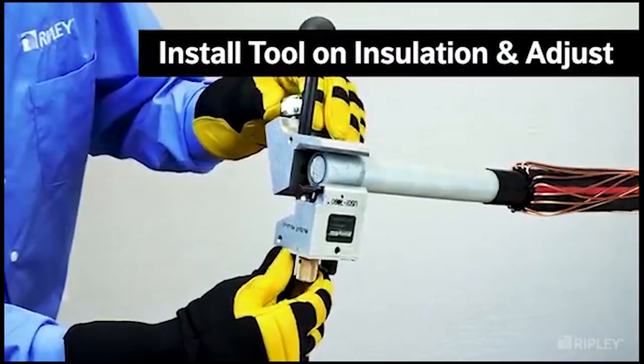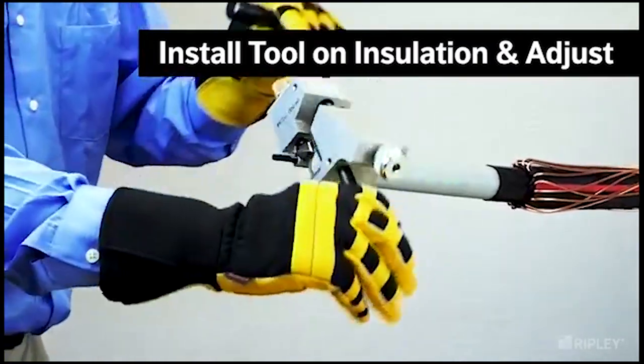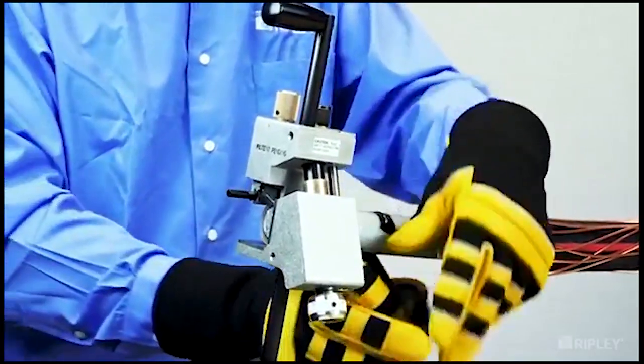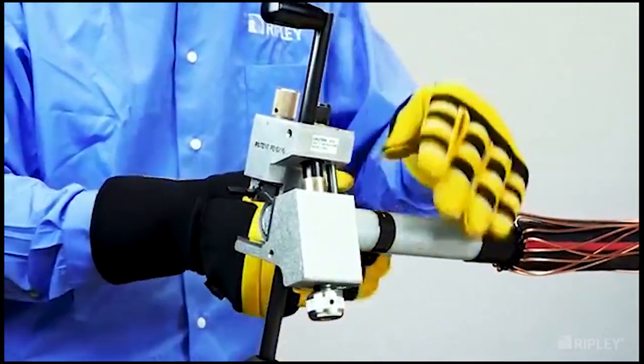Re-install the Infinity around the insulation and re-adjust the blade settings with the blade depth 1-32 of an inch to 1-16 of an inch above the conductor. Set the blade angle to 10 degrees.